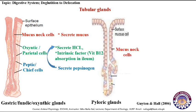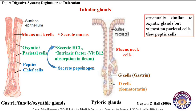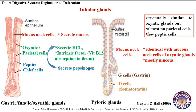Pyloric glands are composed of mucus neck cells, G cells, and D cells. They are similar in structure to oxyntic glands but have no parietal cells and few peptic cells. Instead, they have numerous mucus neck cells that mostly secrete mucus. G cells secrete a hormone called gastrin that stimulates acid secretion. D cells secrete a hormone called somatostatin that inhibits acid secretion.